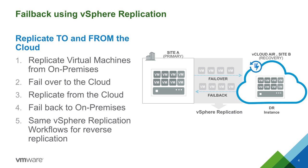Native Failback allows you to replicate your virtual machines back to your on-premises data center after you have performed a failover. In the event of a disaster, you fail over all your virtual machines to the cloud, and you need the ability to restore your services in your data center. Native Failback uses reverse replication, which essentially just repoints the replication of the virtual machines back to your on-premises vSphere environment.